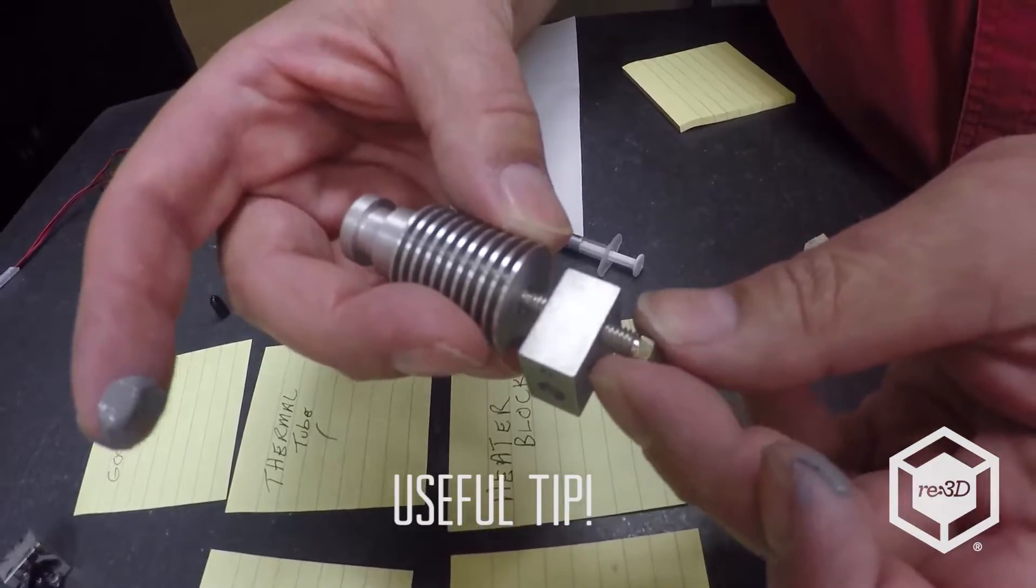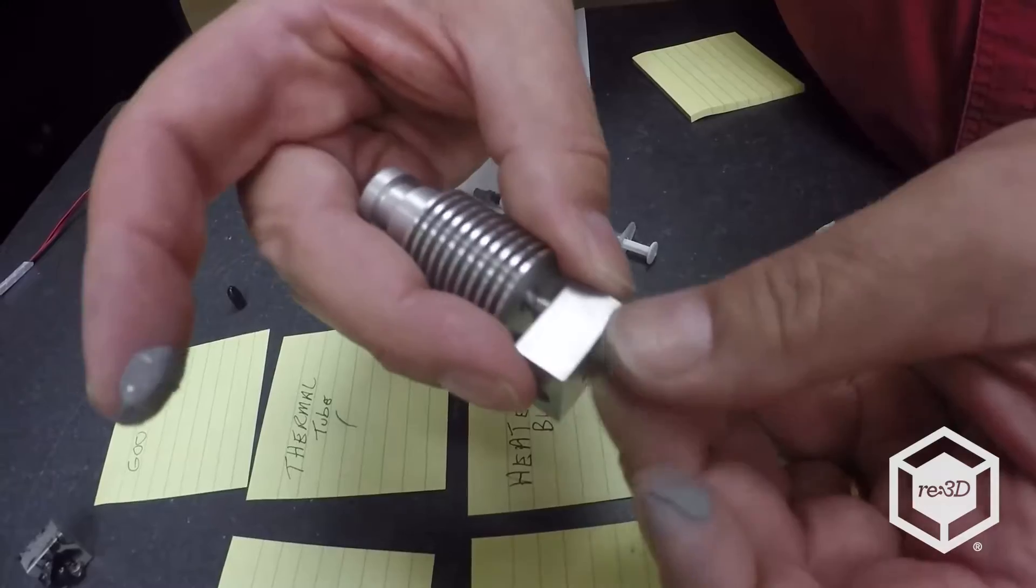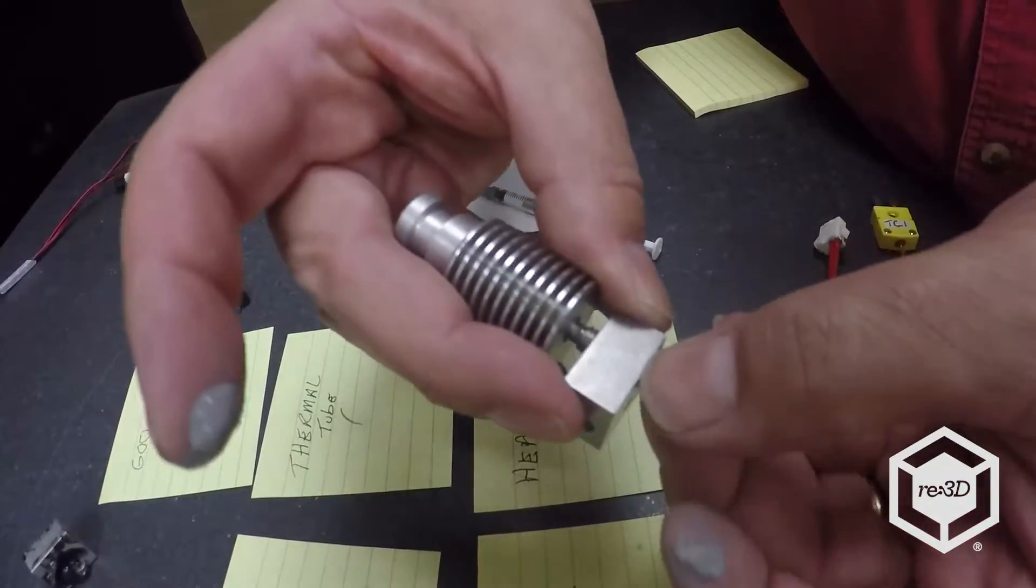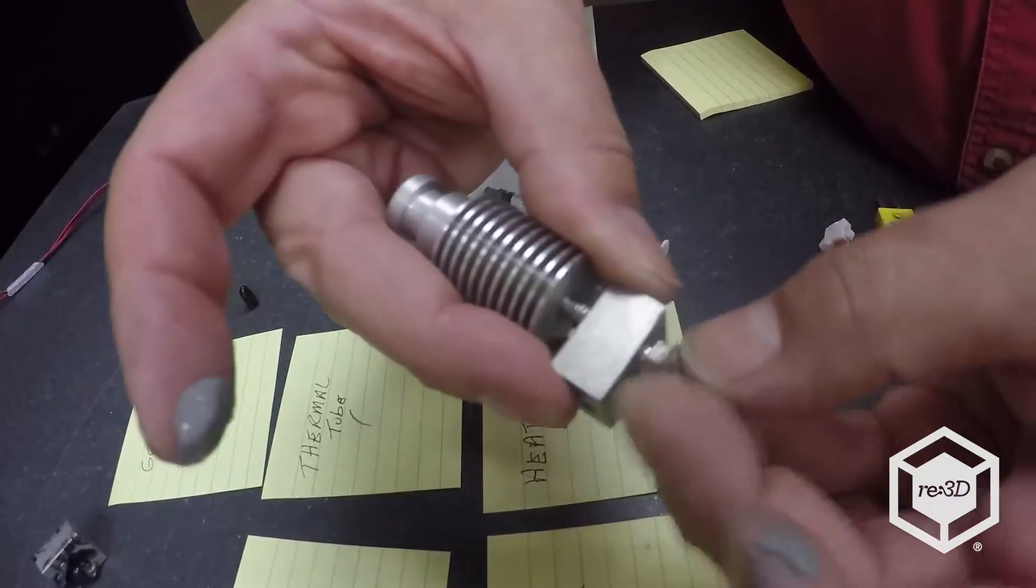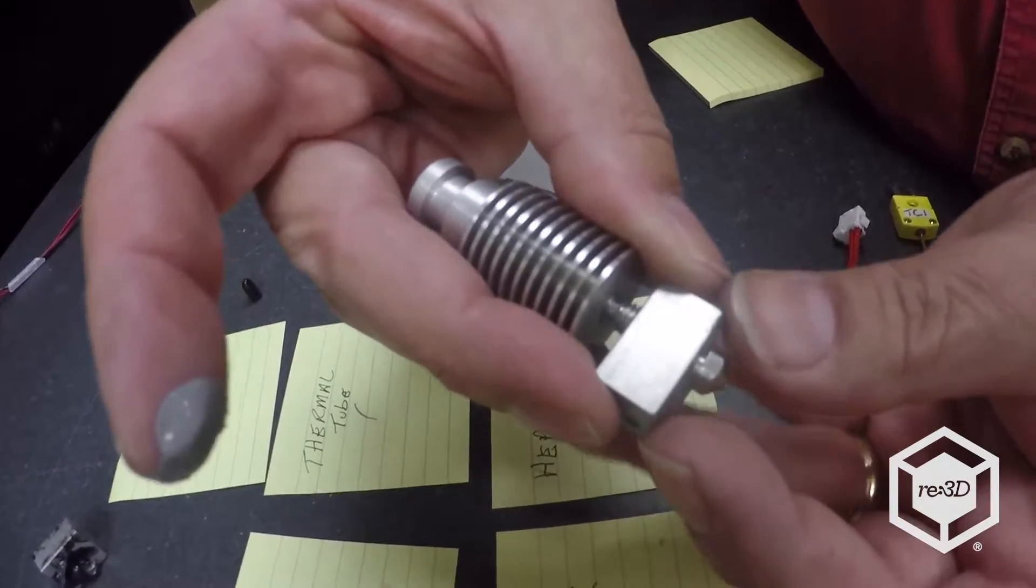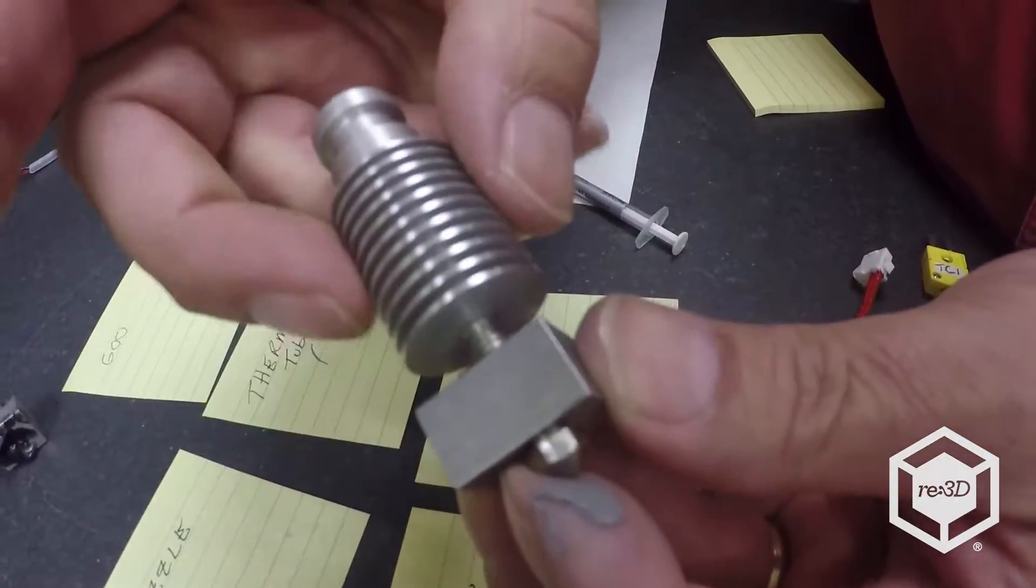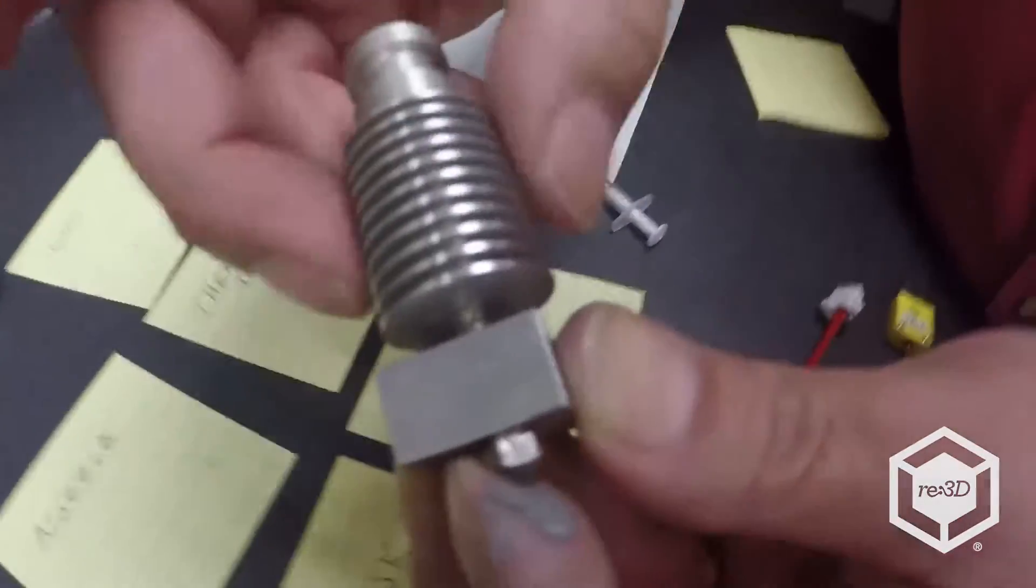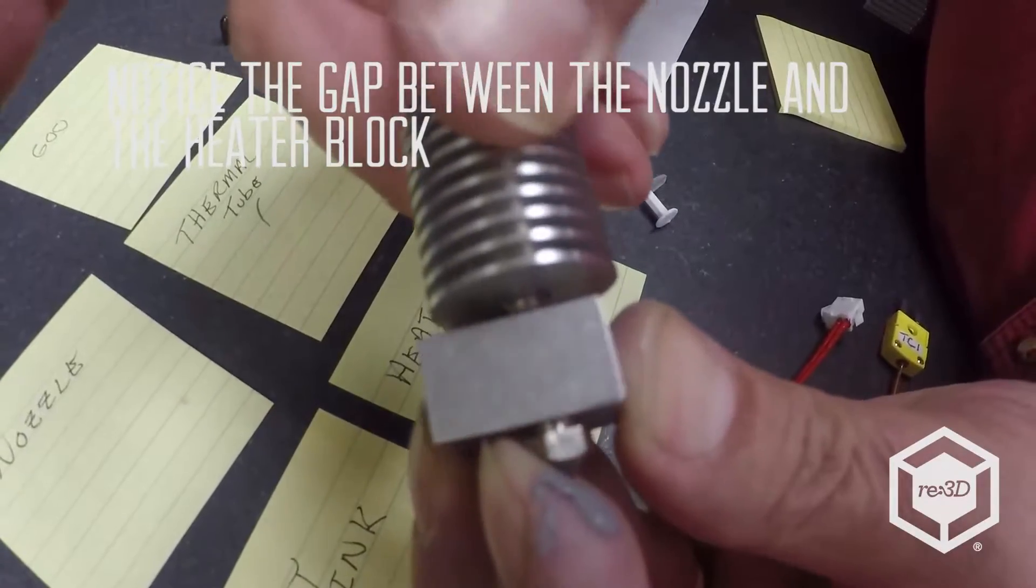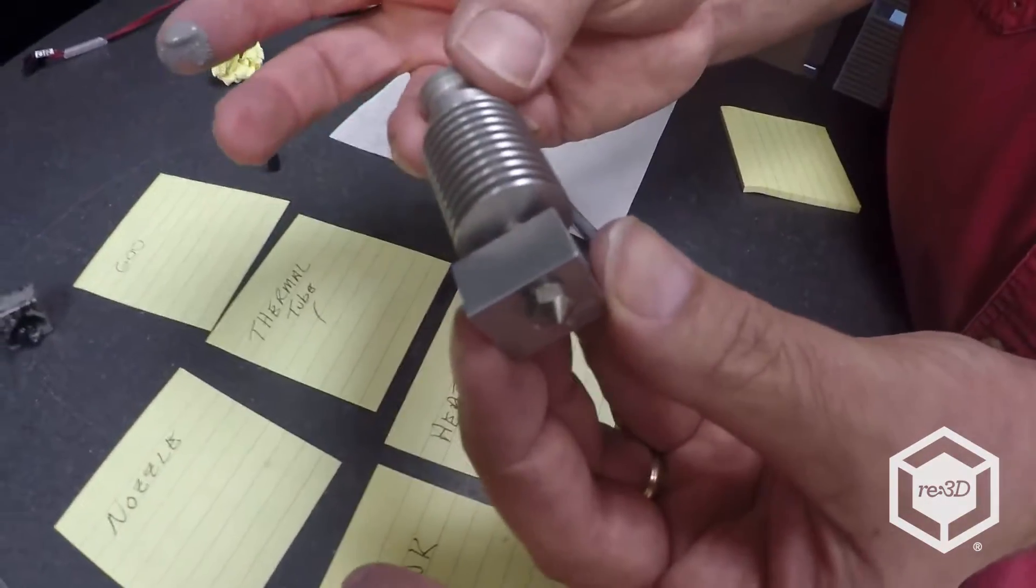So what's going to happen inside here is the nozzle and the thermal tube are actually going to lock together and hold everything together. So we're going to put the nozzle in and we have a somewhat specific gap we use here. There we go and you'll see they'll actually sync up.